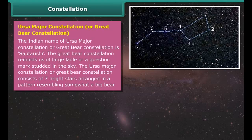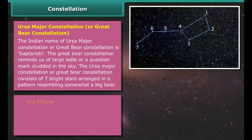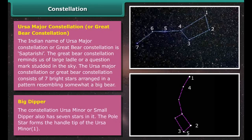The Moon is Earth's one natural satellite and is more than one quarter the size of Earth itself, with a diameter of 3,474 km, making the Earth-Moon system virtually a double planet. Because of its smaller size, the Moon's gravity is one-sixth of Earth's gravity — a person who weighs 60 kg on Earth would weigh just 10 kg on the Moon.